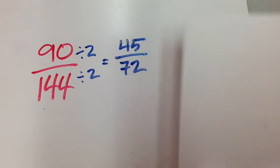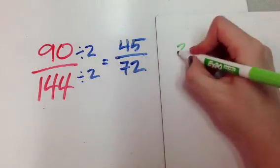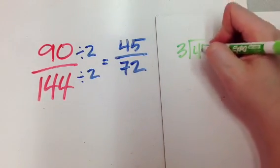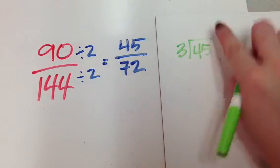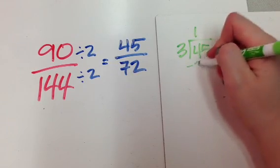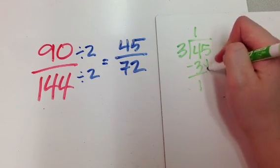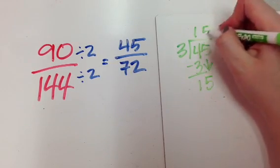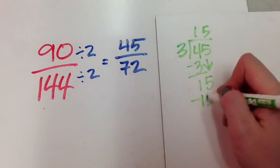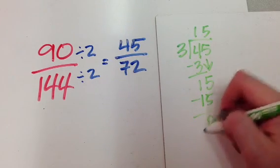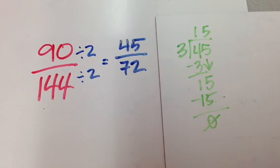Let's give it a try. I wonder if three can go into forty-five. Three can go into four one time. Minus three is one. Drop my five. Oh, look at that. It does. It goes in evenly. Three times fifteen is forty-five.